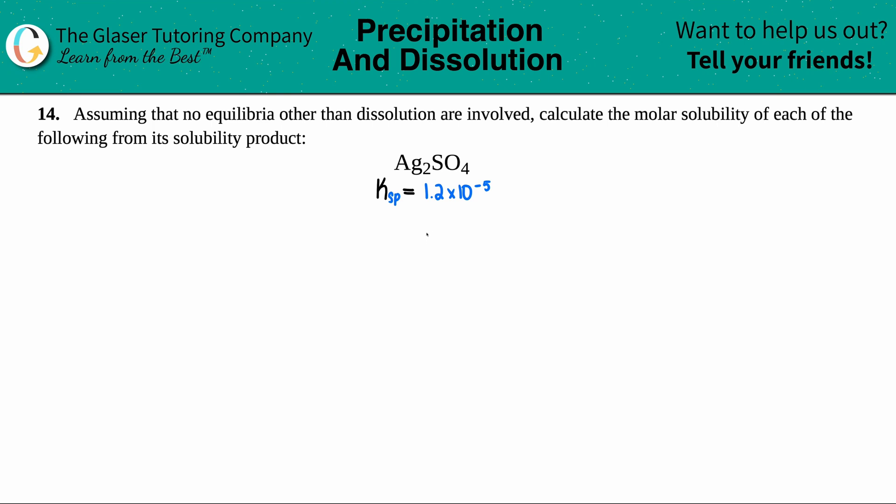Number 14, assuming that no equilibria other than dissolution are involved, calculate the molar solubility of each of the following from its solubility product. And then we have Ag2SO4. So we have to find out what the molar solubility is of Ag2SO4, silver sulfate, from its solubility product.